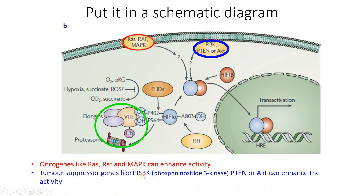We could also have tumor suppressor pathways such as PI3K — phosphatidylinositol 3-kinase — and this would activate the PTEN or AKT genes. This again would serve to enhance the presence of HIF-1 alpha, so that more HIF-1 alpha is available to bind with HIF-1 beta, acting similarly to hypoxia. They don't interact with the PHD enzyme directly, but the key point is that they ensure the complex between HIF-1 beta and HIF-1 alpha is formed, even though the exact mechanism behind how they do it is not clearly known.